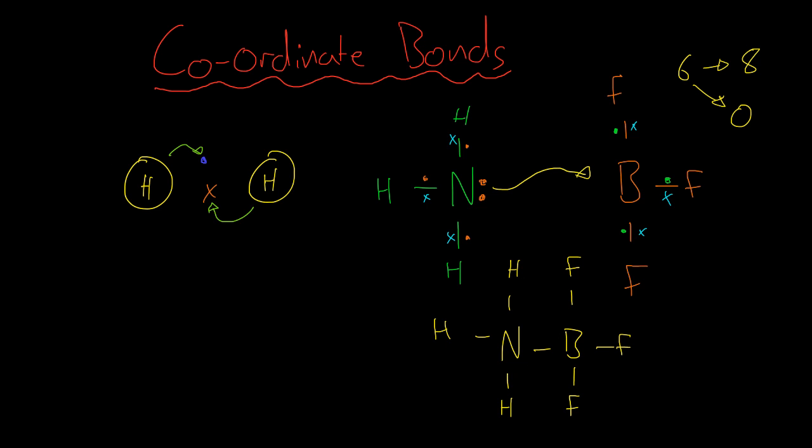But this bond in the middle is special, because if we track the electrons, we can see that nitrogen has these 5, boron has these 3, and then the rest come from hydrogen and fluorine. In every one of these covalent bonds, we see that there is a shared pair of electrons, where one comes from one atom and the other comes from the other atom, except in this bond. In this bond, both of the electrons come from the nitrogen. And this is the definition of a coordinate bond.